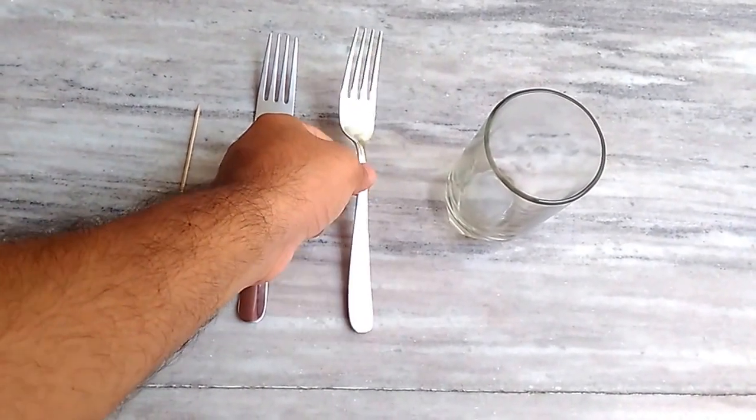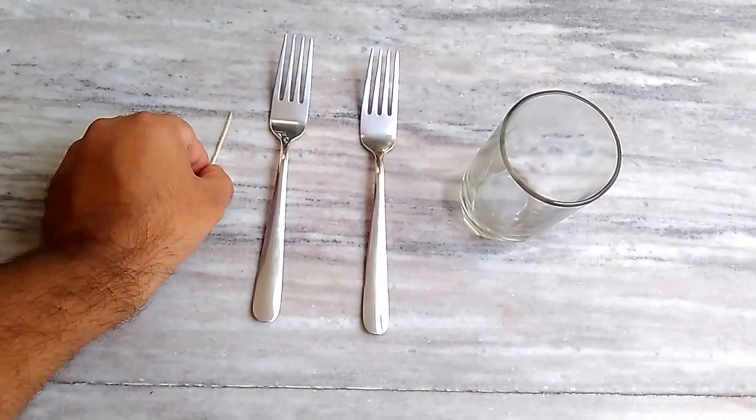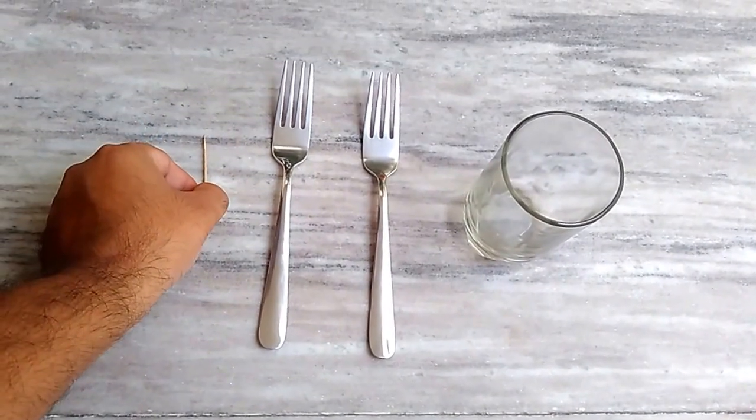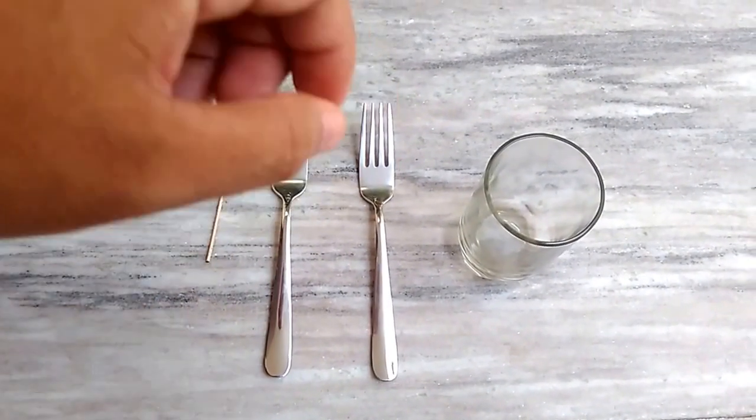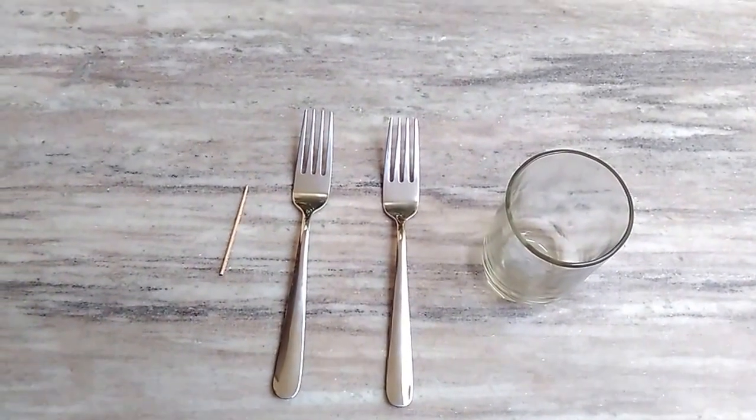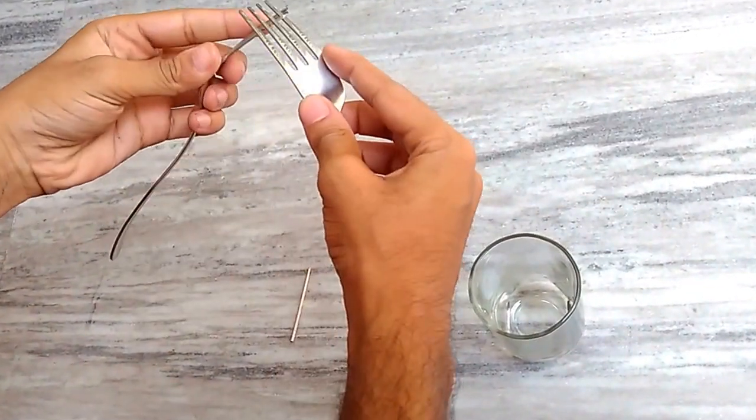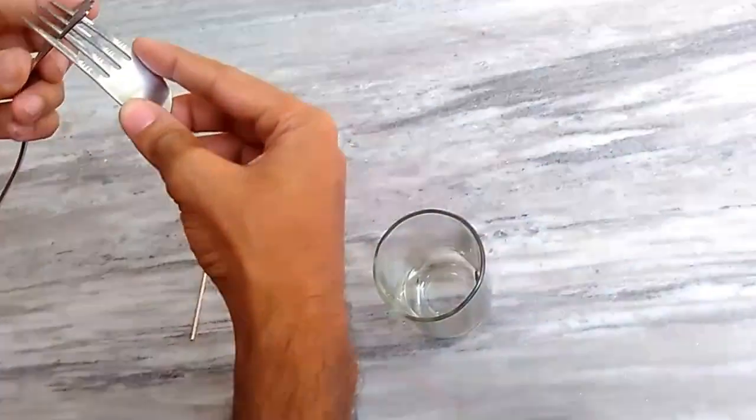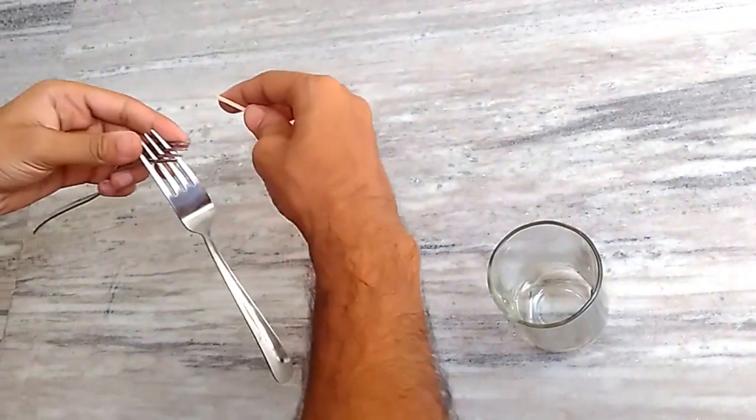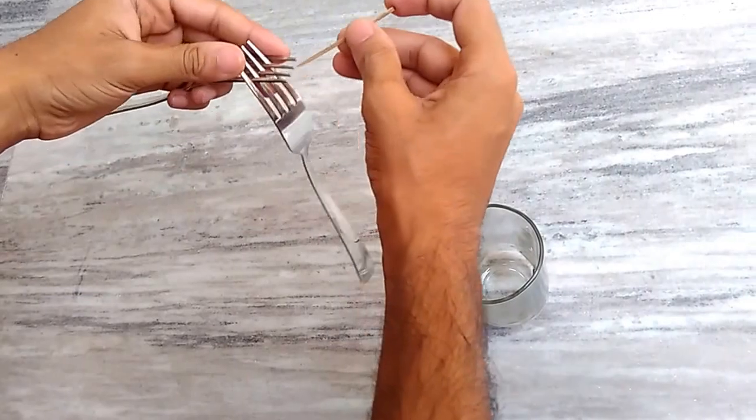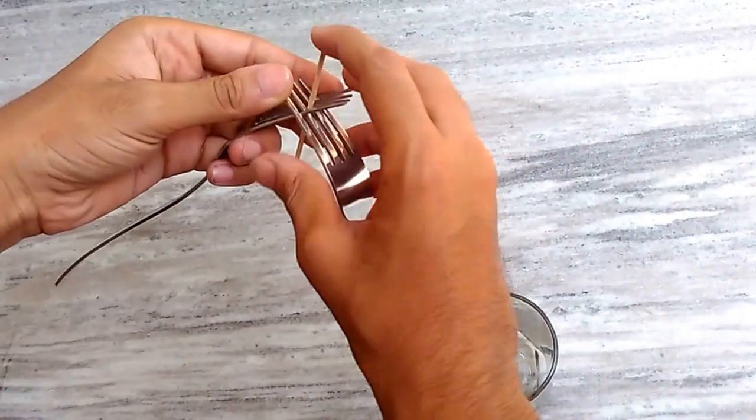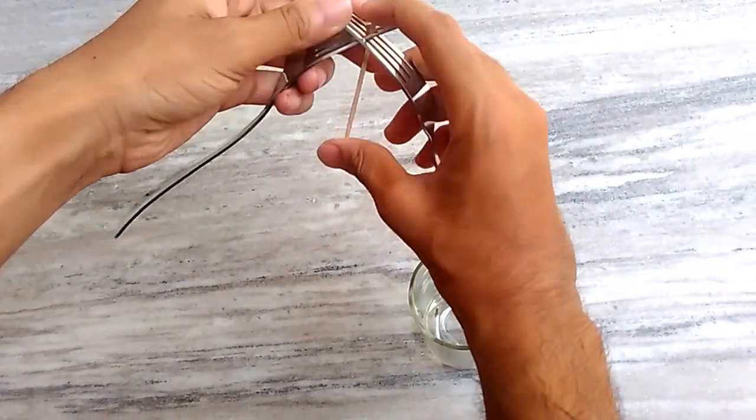We will show you how to do this experiment. We will take the fork and insert one side to the other, and in the middle of it we will insert the toothpick like this.